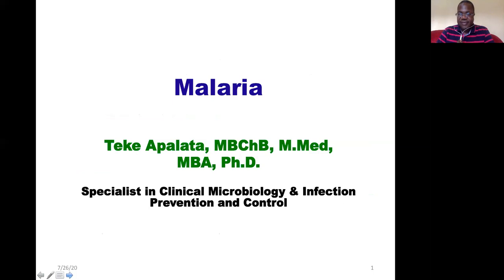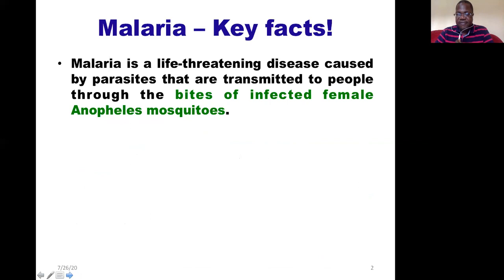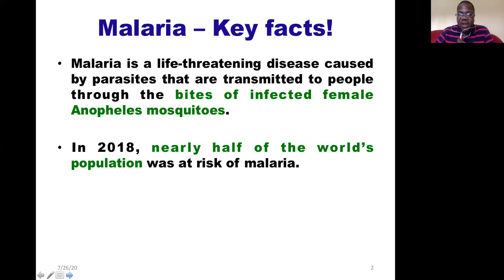We are going to start with some key facts about malaria. The first one is that it is a life-threatening disease and it is caused by parasites that are transmitted to human hosts through the bite of infected female Anopheles mosquitoes. And in 2018, almost half of the world population was at risk of developing this disease.